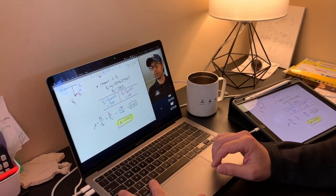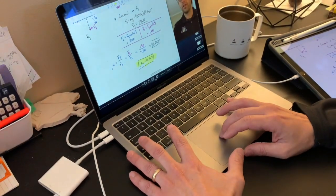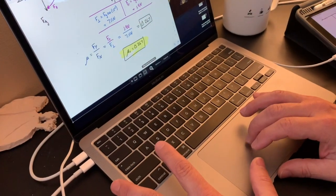To stop recording, do those Command keys again, Shift, Command, and Five, the menu will pop up, and simply hit Stop.